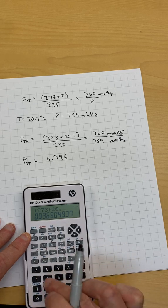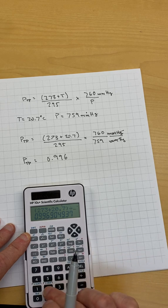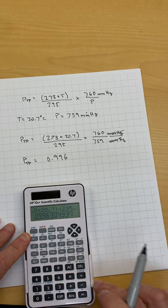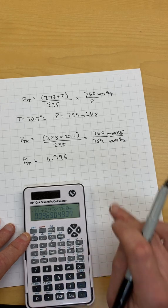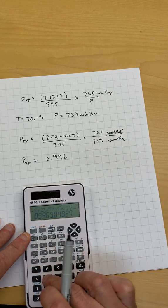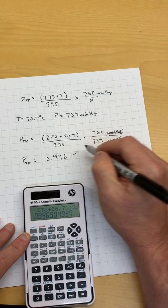273 plus 20.7, I'm going to use that feature, divided by 295 times 760 divided by 759 equals. I got the same number twice, so that must be correct.